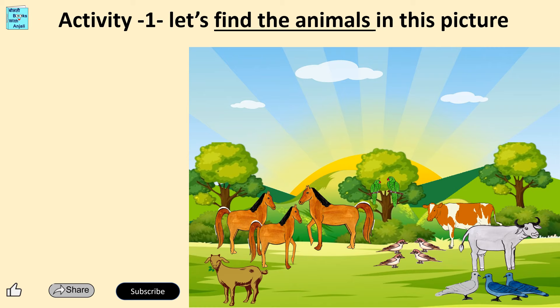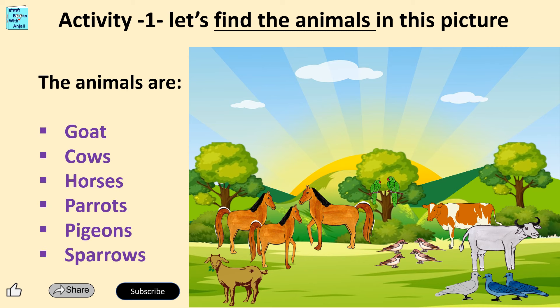Activity 1. Let's find the animals given in this picture. The animals are goat, cows, horses, parrots, pigeons and sparrows.